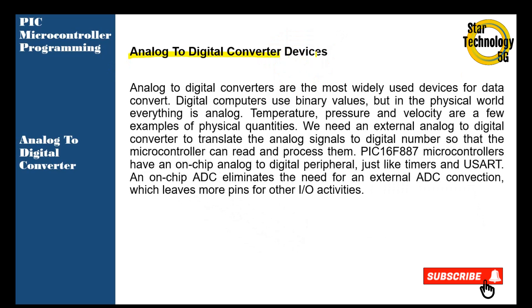Analog to Digital Converter Devices. Analog to Digital Converters are the most widely used devices for data conversion. Digital computers use binary values, but in the physical world everything is analog. Temperature, pressure and velocity are a few examples of physical quantities. We need an Analog to Digital Converter to translate the analog signal to a digital number so that the microcontroller can read and process them.